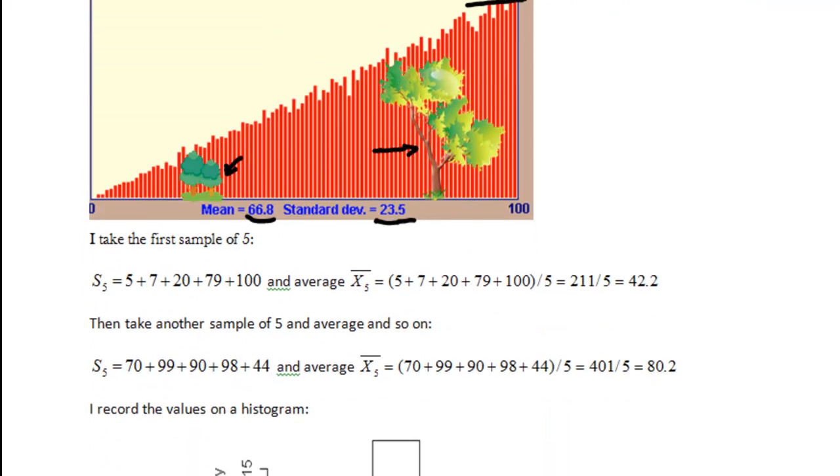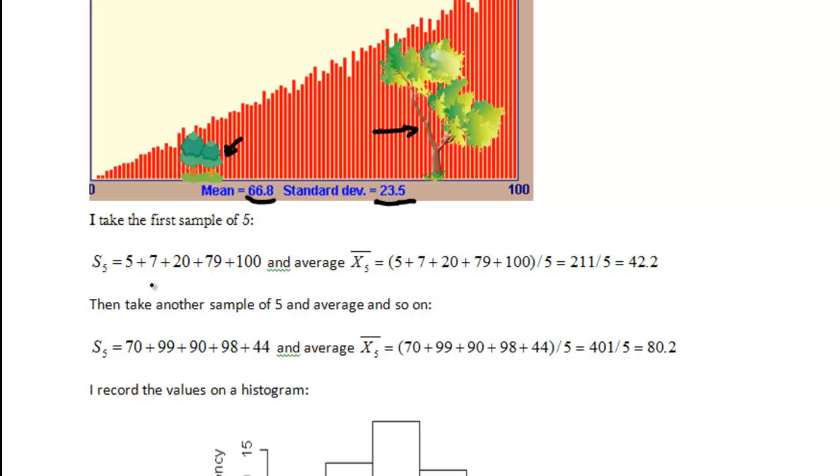Okay, so I go to the forest I close my eyes and randomly I select samples. So the first sample I selected was 5, 7, 20, 79 and 100 meters and I average it.